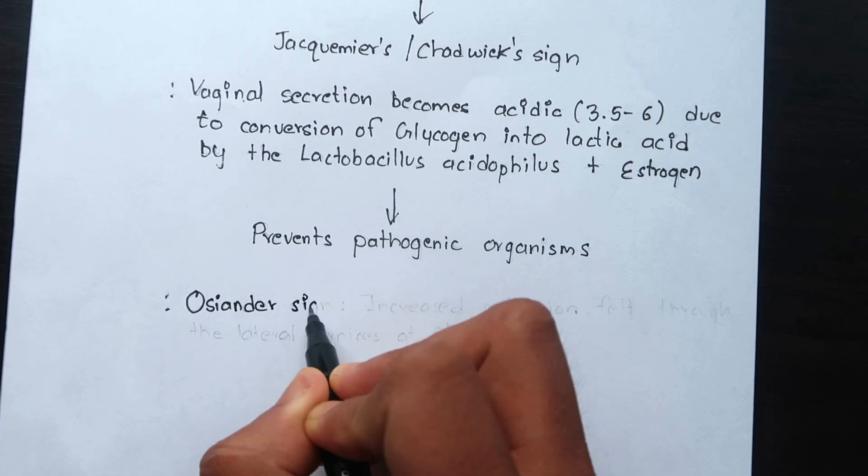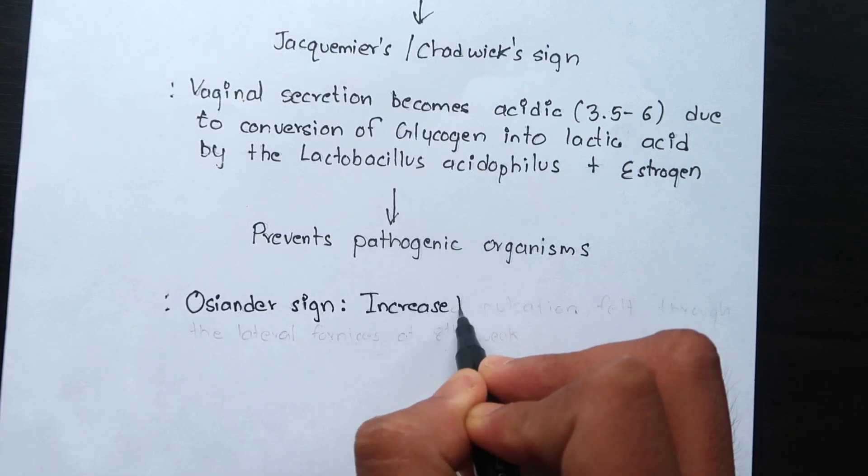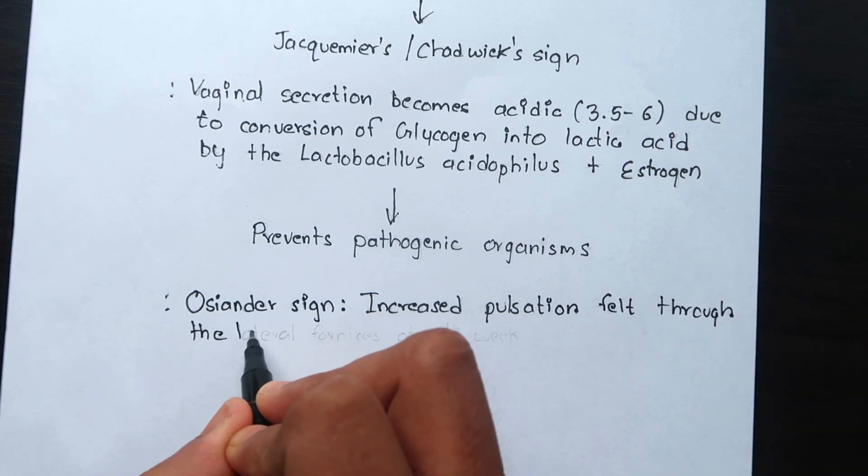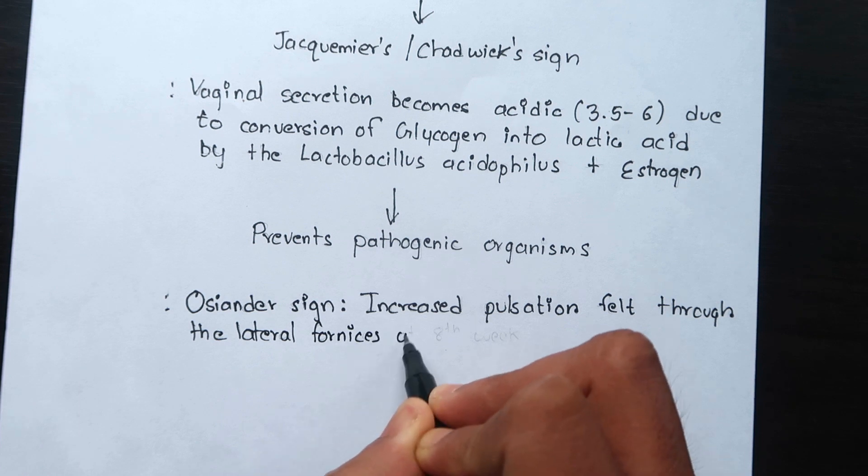Osiander's sign is the stronger and harder vaginal pulsations felt through the lateral fornices caused by the greatly increased blood supply and enlarged uterine artery.